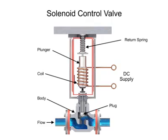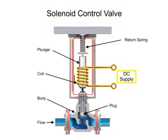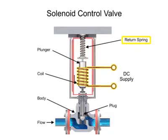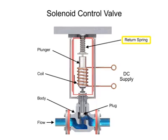For on-off control of the valve, a solenoid is used to actuate the valve to a fully closed or fully open position. Applying current to the coil generates a magnetic field that moves the plunger downward against the return spring. With zero current applied to the coil, the spring pulls the plunger upwards to the fully open position for a normally open state control valve.